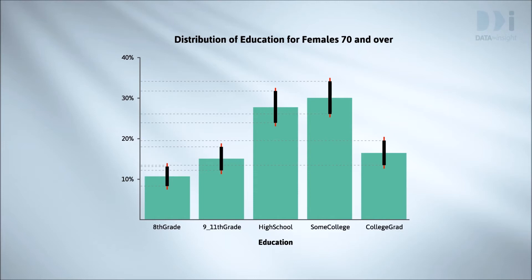The thicker black lines are the comparison intervals. The confidence intervals are the longer red lines which sit underneath the black lines with only their ends showing. We work with these in the same way as before. There are lots of comparisons where we can't see which bar is really higher, that is which of the true percentages is bigger.